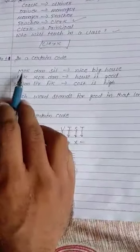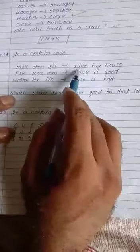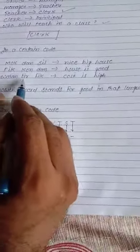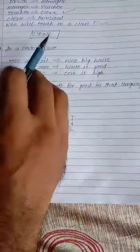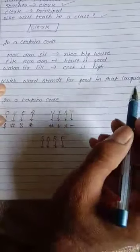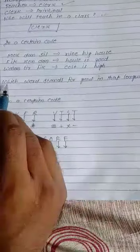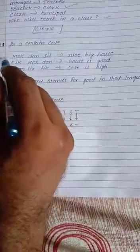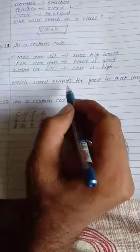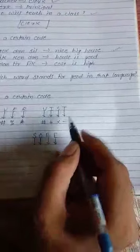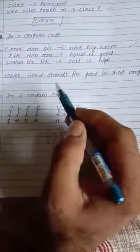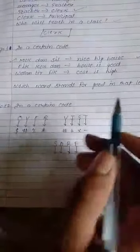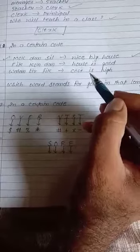Now come to the next question. In a certain code, MOKDANSIL is called as that nice big house. FIKKONDONA, house is very good. So WARMTIRFIK, cost is high. That means this code has a meaning of these sentences. And on the basis of these particular sentences, we have to give the answer which word stands for good. Now in this type of question, we cannot, as we all know, understand this particular language. So for making or decoding this particular question, we will go through with this particular language because this is an understandable language. So what is the funda for solving this particular question? That is only just take out the common letters, common alphabets. So on the basis of that particular common words or alphabets, you will give the answer.